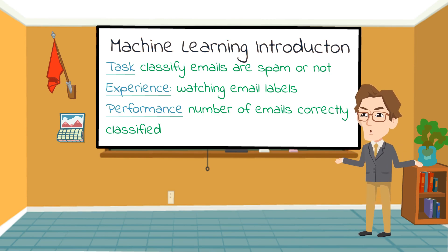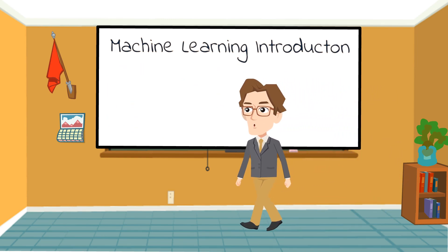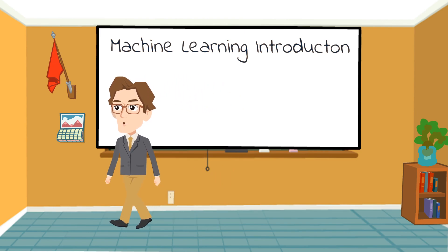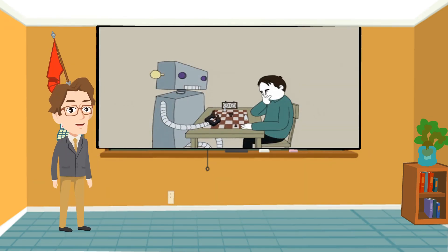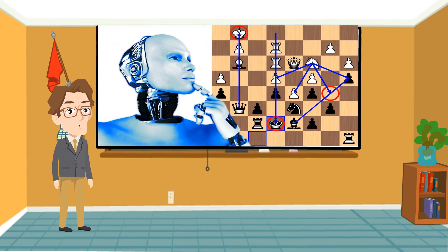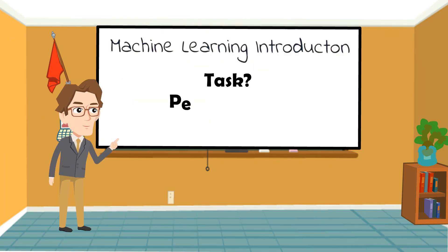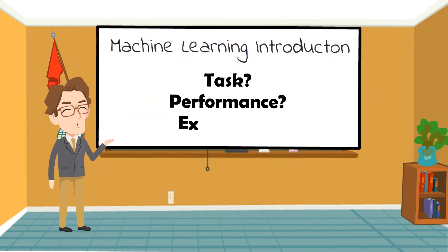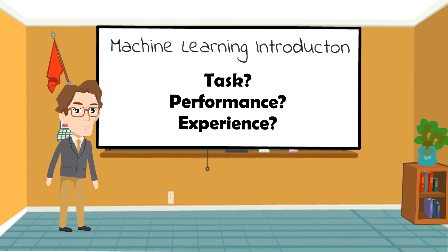Let's take another example. A computer program that learns to play checkers might improve its performance as measured by its ability to win. The task involves playing checkers through experience obtained by playing against itself. For this example, what will be the task, performance, and experience? Pause the video and try to solve.